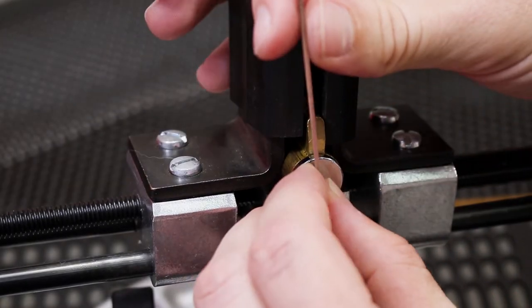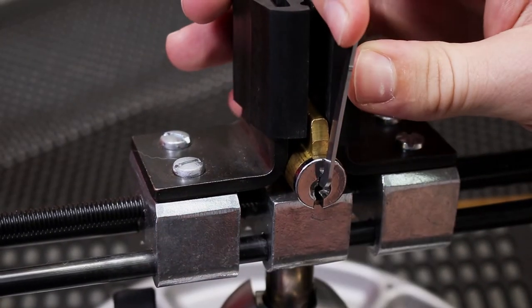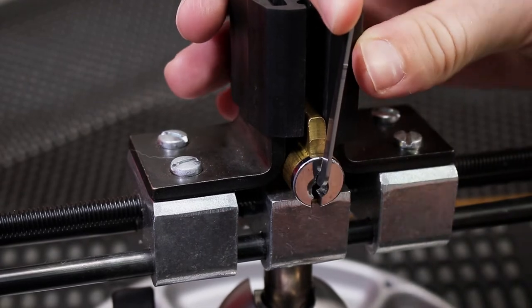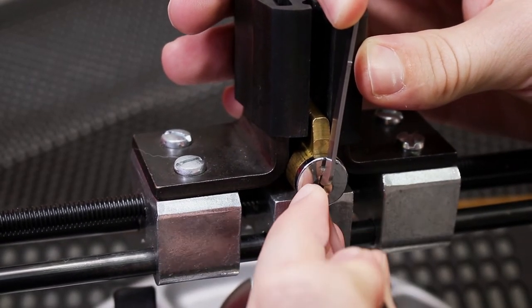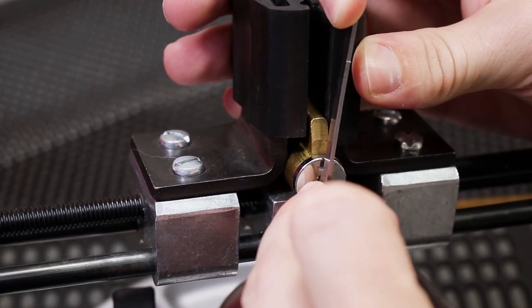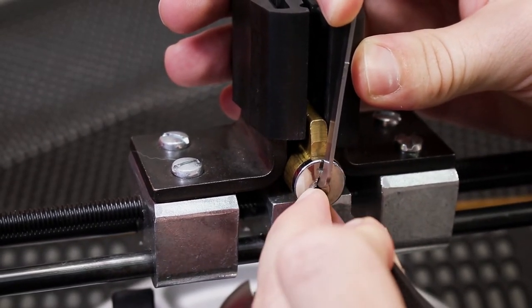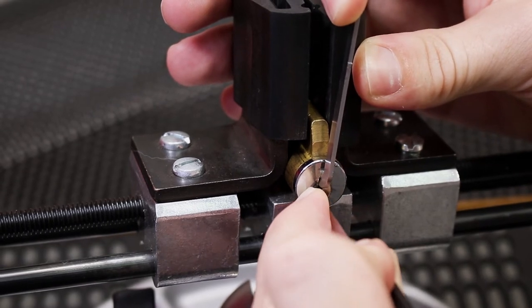Alright, so what I'm going to do now is I'm going to pick this lock open and show you an example of how the plug spinner works. This is just a Schlage lock and it has nothing really special to it. We're just going to get it open in just a moment here and then we're going to go over how to use this plug spinner.